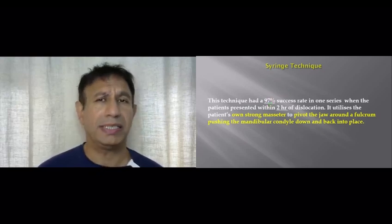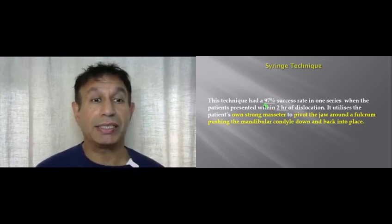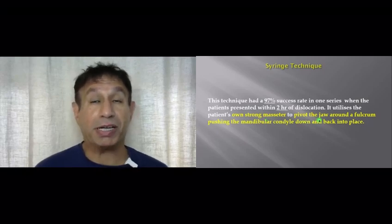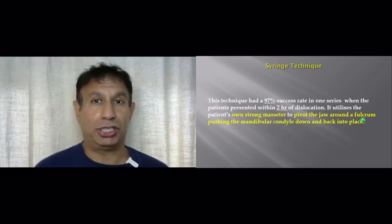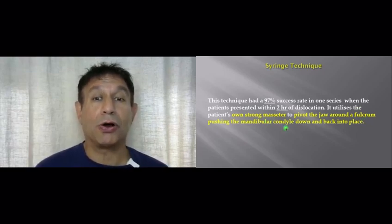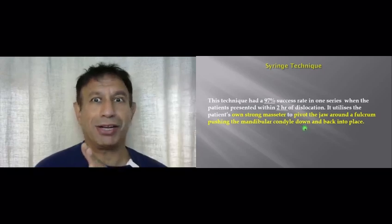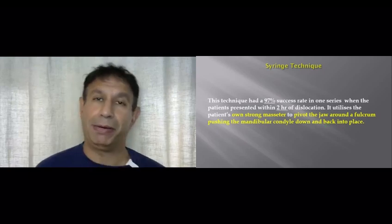So how does this technique work? This technique utilizes the patient's own strong masseter muscles to pivot the jaw using the syringe as a fulcrum, pushing the mandibular condyle down below the articular eminence and back into the mandibular fossa.